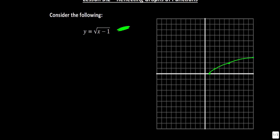So how would we take that function and reflect it in the x-axis — so if we wanted this function to go down and look something like that, what would happen to the equation? I'll do this one in blue. The equation would look like this: y is equal to the negative of the square root of x minus 1. You just put a negative out in front. If we put an input value of 1, then 1 minus 1 gives you 0, and the square root of 0 is 0, and 0 times a negative is still just 0 — so that point is at the same spot.